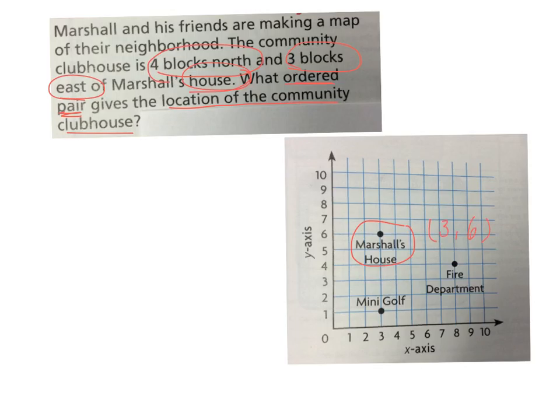So if I know that north goes up, am I going to be adjusting the x-axis or the y-axis coordinate? The y-coordinate. And is three or six the y-coordinate? Six, yes. And then how many blocks north is it? Four. So what do I have to do to the y-coordinate? Add four. What's six plus four? Ten. That's the y-coordinate. How do I have to change the x-coordinate? You have to add three. Why? Because in the problem it says it is three blocks east of Marshall's house. When I'm moving three blocks to the east, I'm moving three blocks to the right. And when I'm moving to the right, am I moving on the x-axis or the y-axis? X. So three plus three is six. So the x-coordinate for the clubhouse must be six.